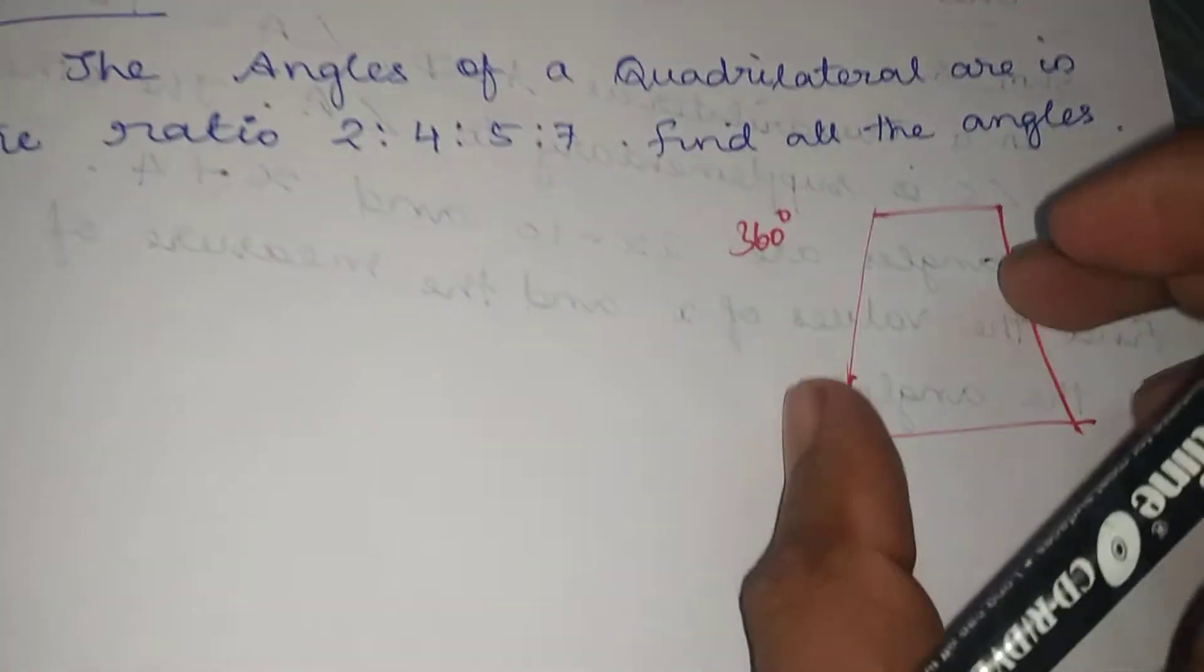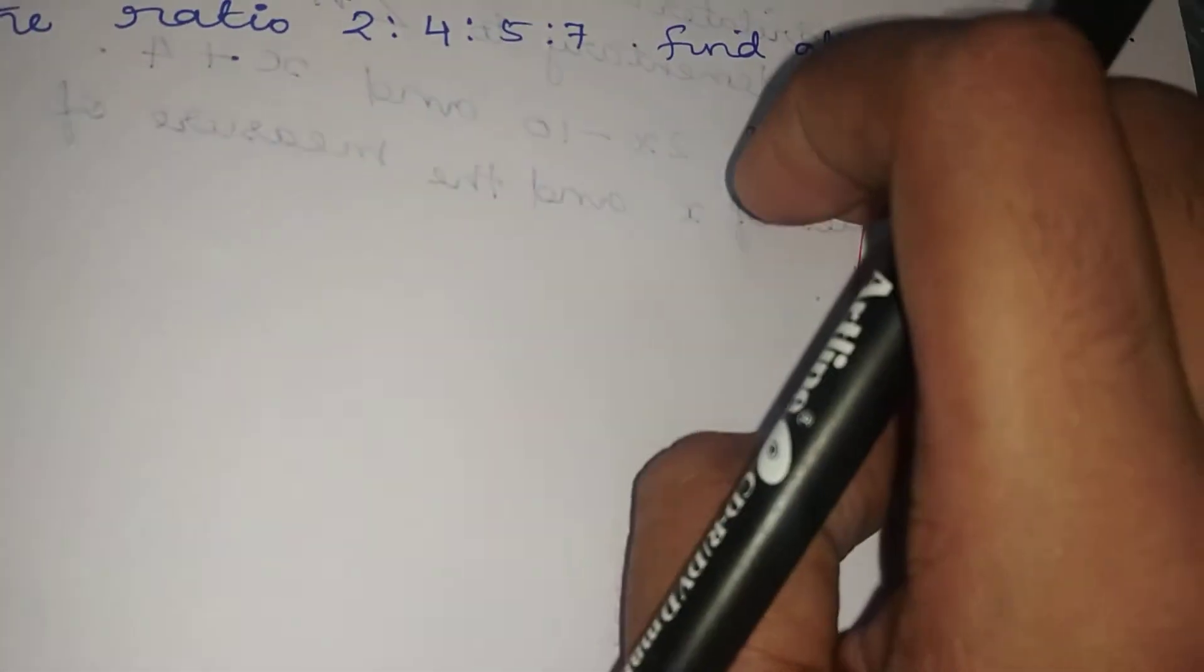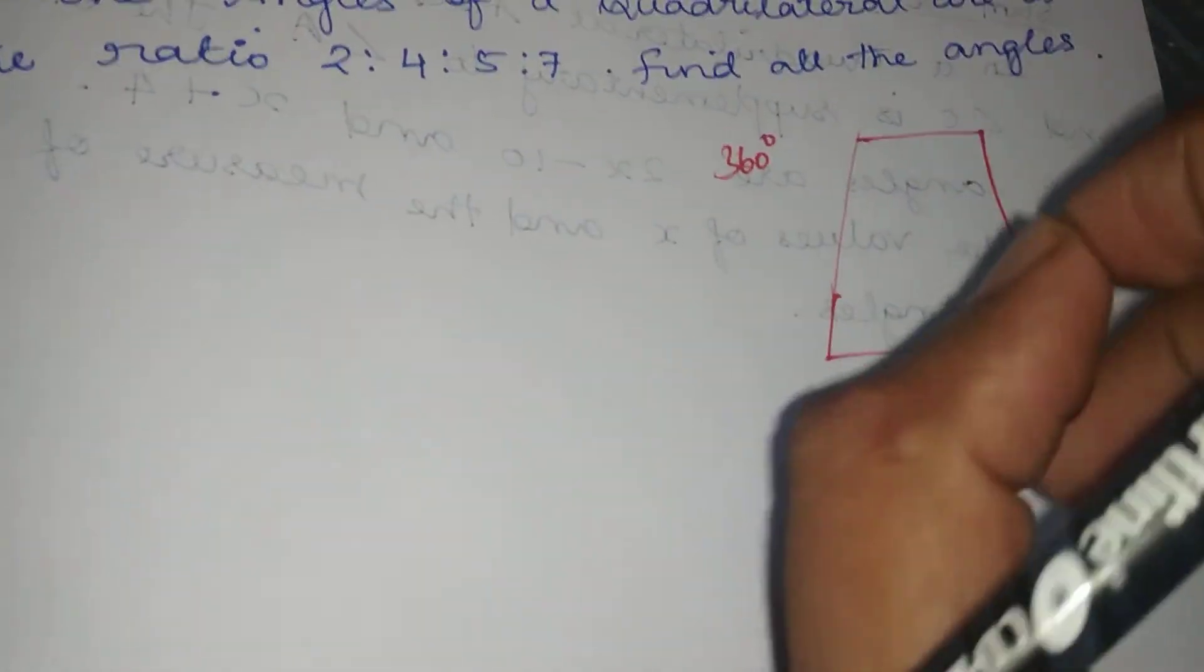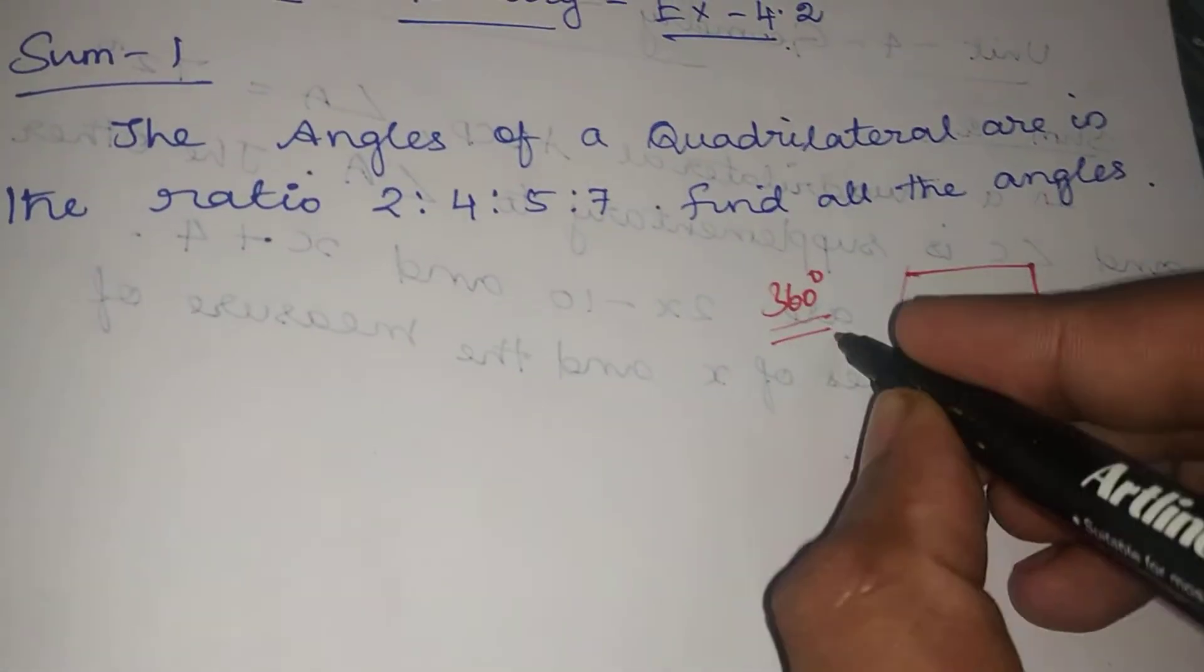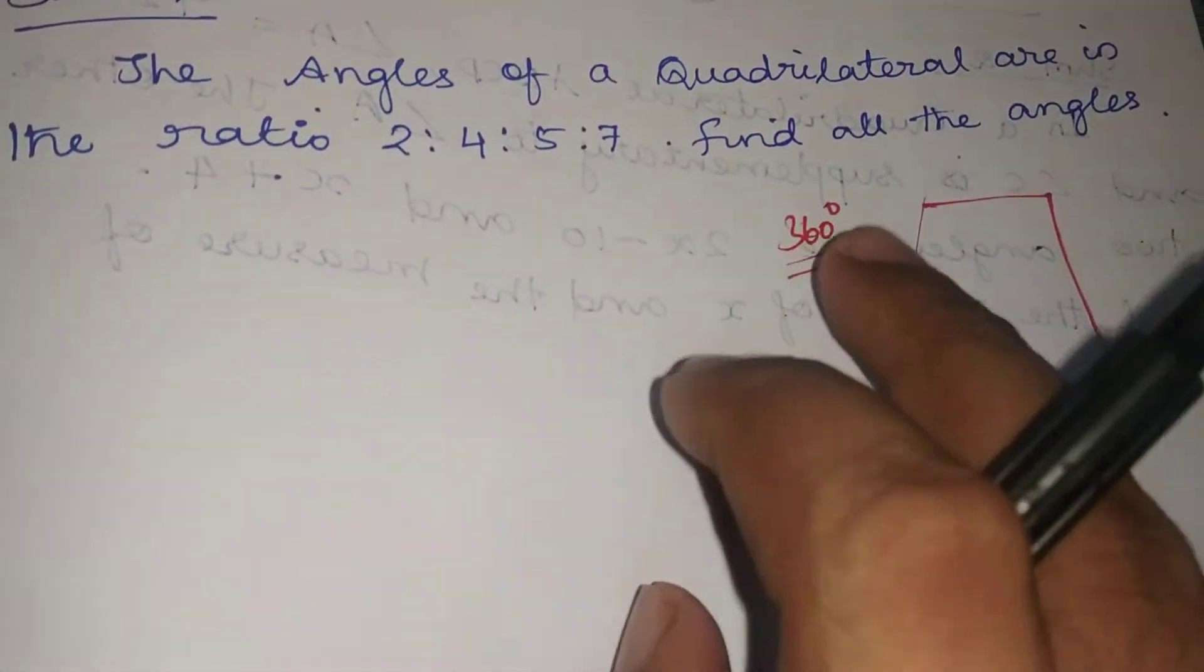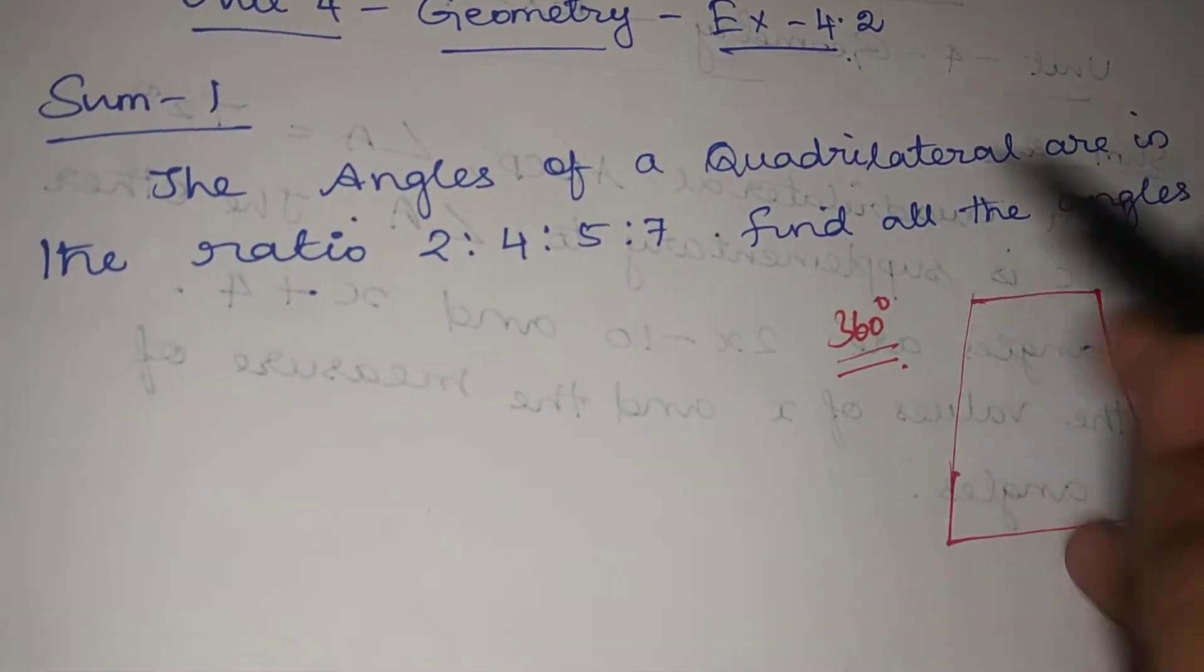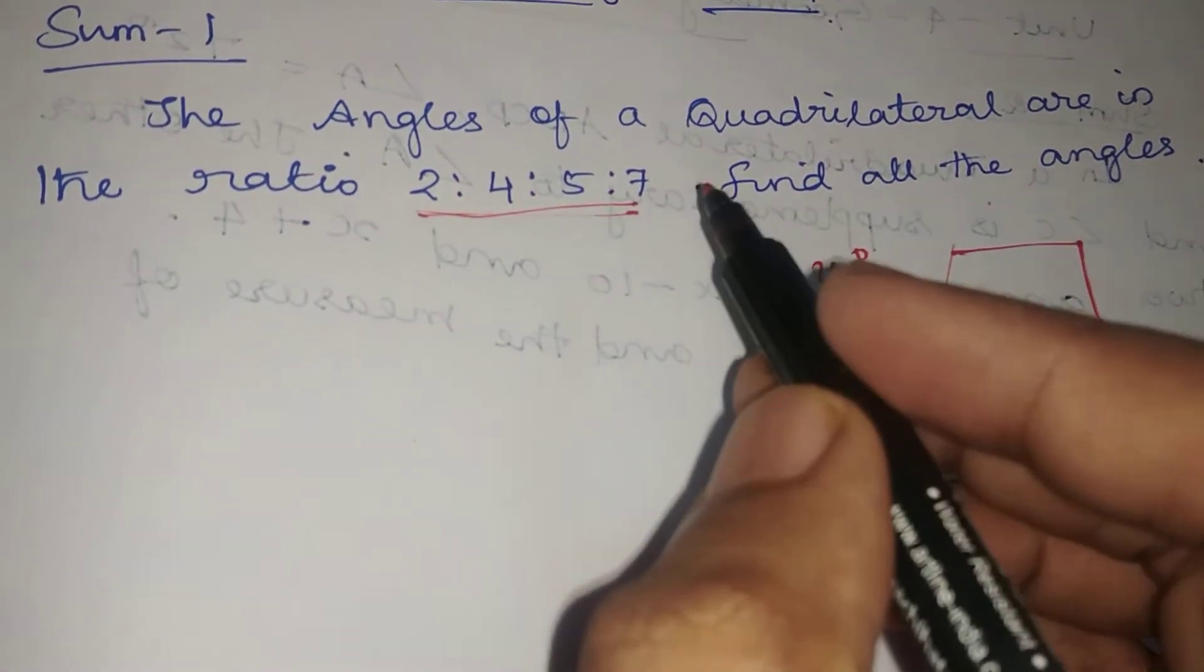In this quadrilateral, when you add all the angles, the sum is 360 degrees. The angles of the quadrilateral are in ratio 2:4:5:7. Let the angles be in terms of X.